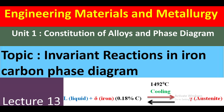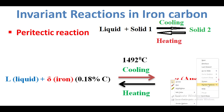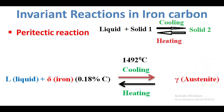Invariant reactions in the iron-carbon phase diagram. The first invariant reaction of the iron-carbon diagram is the peritectic reaction. In this peritectic reaction, one liquid and one solid solution is converted to another solid solution.